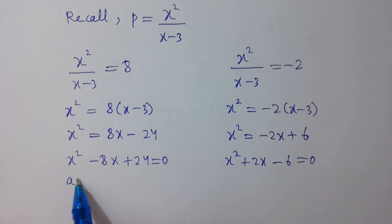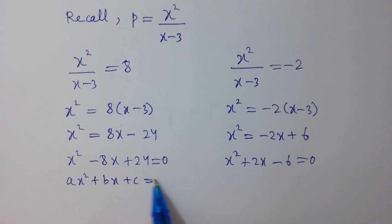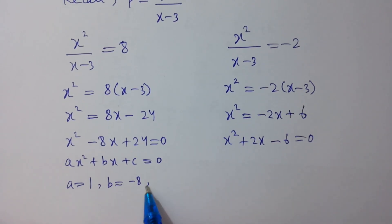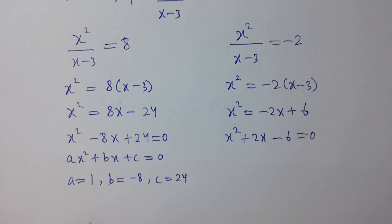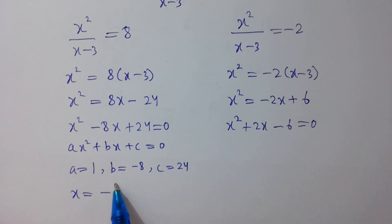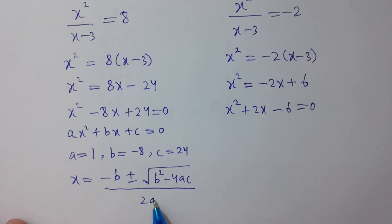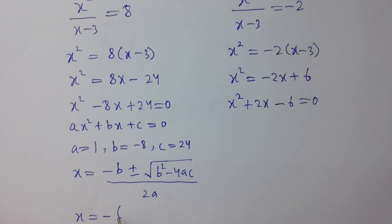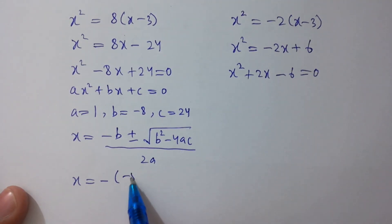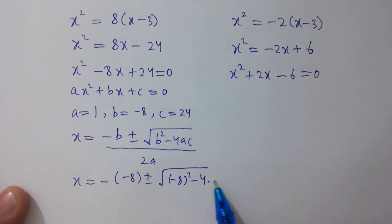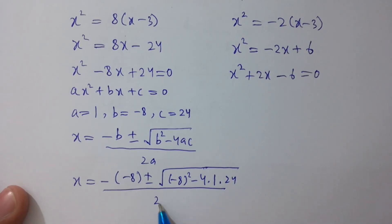Using the quadratic formula ax² + bx + c = 0: for the first equation, a equals 1, b equals minus 8, c equals 24. Applying the formula: x equals minus b ± √(b²-4ac) / 2a, so x equals 8 ± √(64 minus 4 times 1 times 24) over 2.